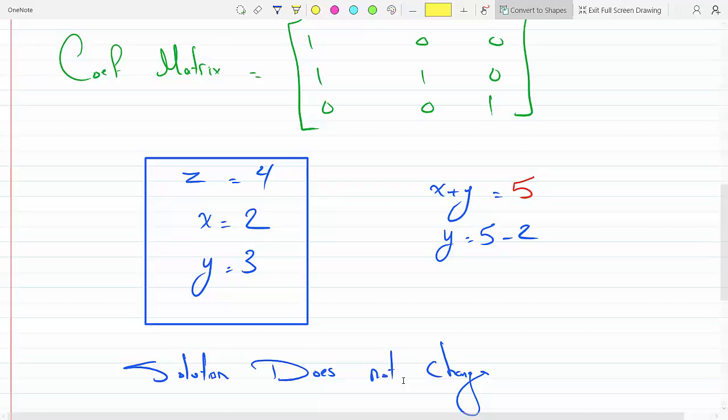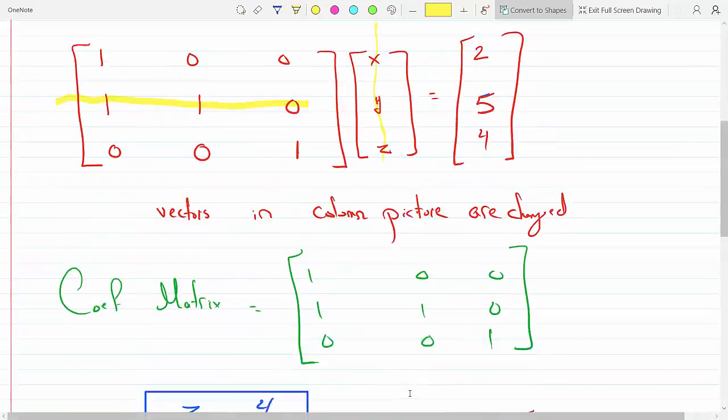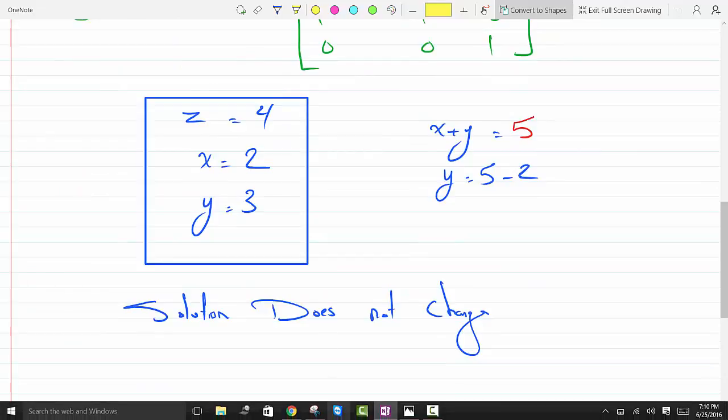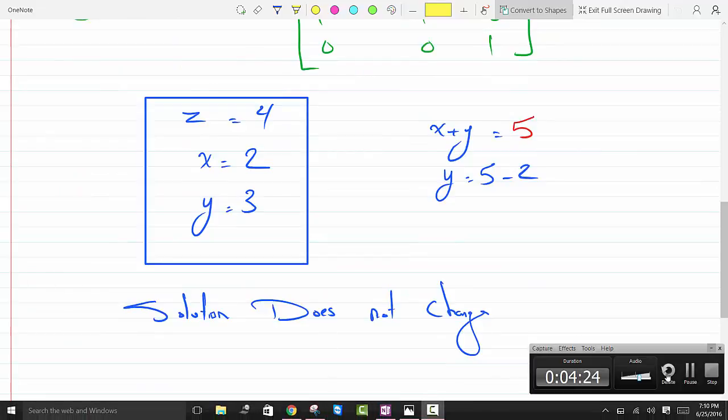So this question illustrates that if I add or subtract rows to each other, as long as I keep the format consistent, although the coefficient matrix might change and the plane in the row picture might change, the solution remains the same.